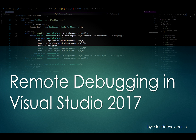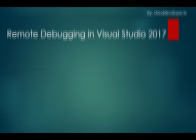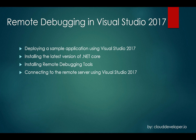Hello, and welcome to a Cloud Developer channel. In today's video, I'm going to talk about remote debugging using Visual Studio 2017. The items we're going to touch on are deployment of a sample application using Visual Studio 2017, installing the latest version of .NET Core, enabling remote debugging by installing remote debugging tools, and connecting to that remote server using the Visual Studio 2017 debugging process.